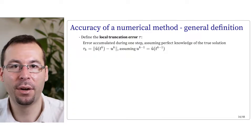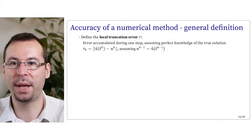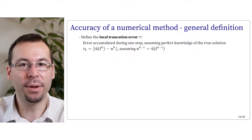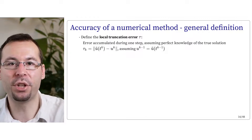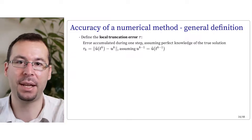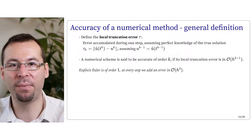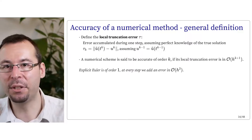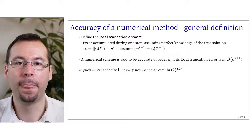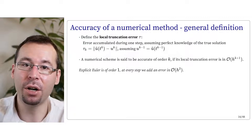Before looking at other methods, let's see some formal definitions. The accuracy of a numerical method is defined independently of the equation, using the local truncation error: the accumulated error in one step assuming perfect knowledge of the true solution at the previous step. A method is said to be accurate of order k if its local truncation error is O(h^{k+1}). Explicit Euler has a local truncation error of O(h²), making it a first-order method — it is exact only when the solution is a straight line.